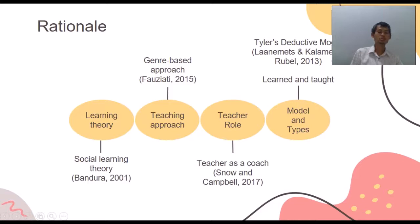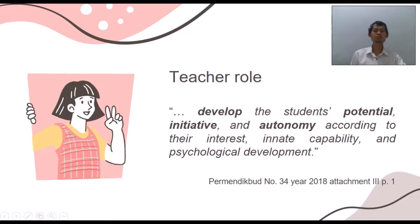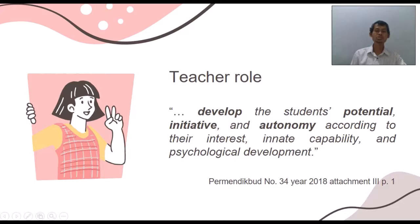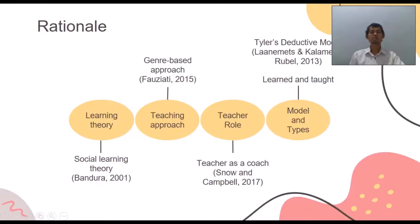For the teacher role, Snow and Campbell in 2017 argued that there are two different types of teacher roles: the sage model and the coach model. If we see the curriculum, teachers develop the student's potential, initiative and autonomy according to their interest, unique capability and psychological development. So we can conclude that the teacher role follows the coach model as proposed by Snow and Campbell in 2017.